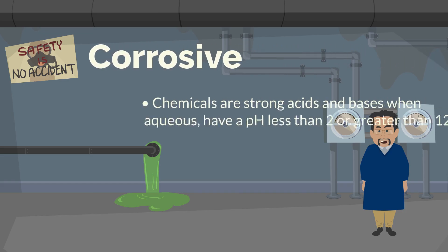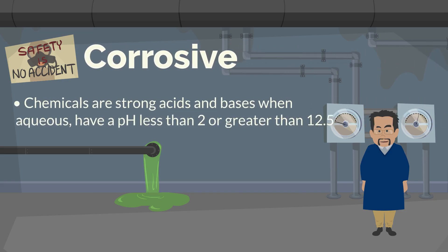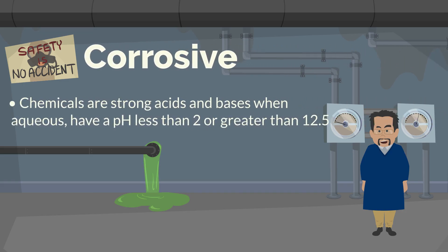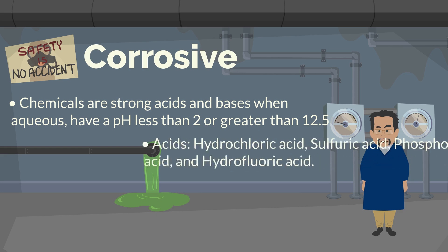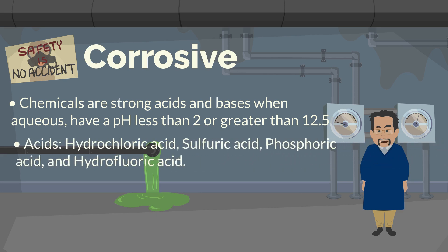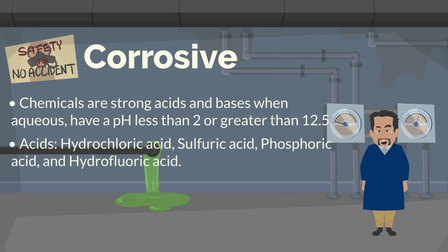Corrosive. Lastly, corrosive chemicals are strong acids and bases that, when aqueous, have a pH less than 2 or greater than 12.5. A few acids considered corrosive are hydrochloric acid, sulfuric acid, phosphoric acid, and hydrofluoric acid.